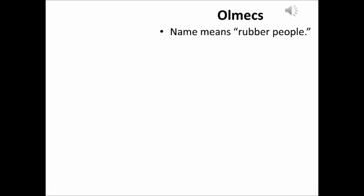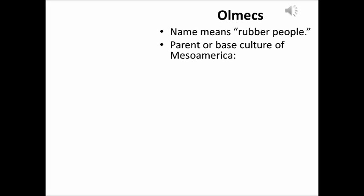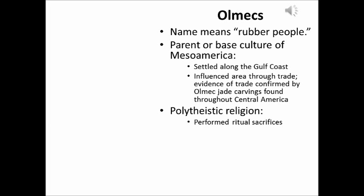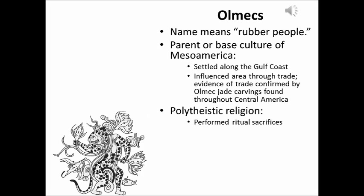The first group of people we're going to talk about are the Olmecs. The Olmec name actually means 'rubber people.' They were the base culture of Mesoamerica. They settled along the Gulf Coast and influenced trade, including that of jade, which can be found throughout Central America. Their religion was polytheistic, usually revolving around sacrifices. Animals like the jaguar were important, and of course the sun — the climate here is pretty warm and the sun plays a huge role in their life.